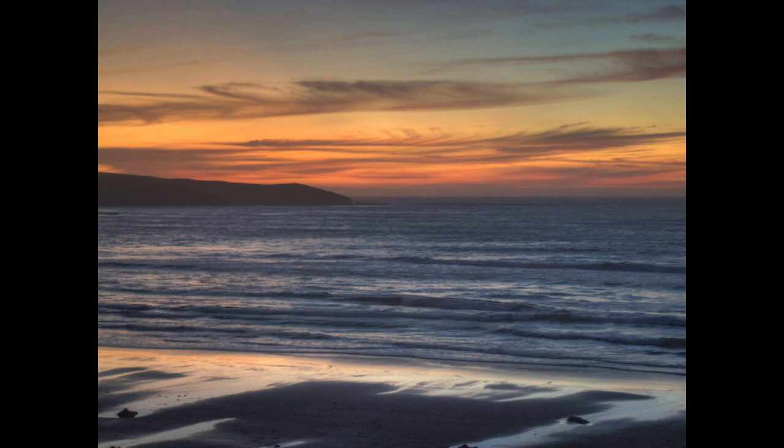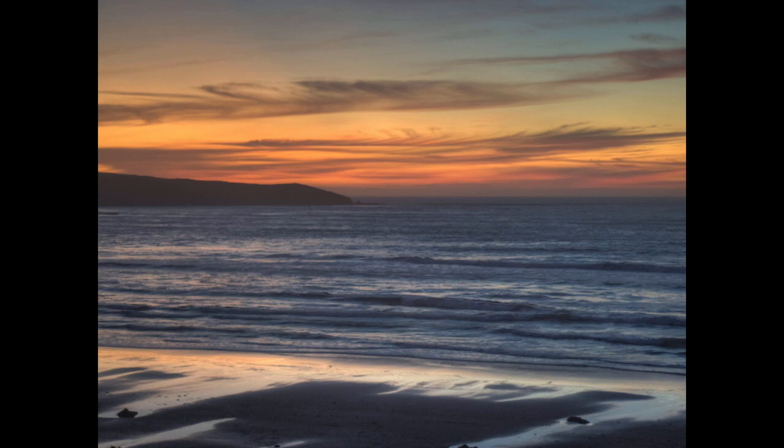We're going to take three separate images. We take an image that's properly exposed for the scene, an image that's deliberately underexposed, and an image that's deliberately overexposed. We have our dark image where the shadows are too dark to see anything, our middle image at correct exposure, and our light image where the highlights are captured but the sky is blown out. We combine those three images together into one, and that's how we get that greater dynamic range.